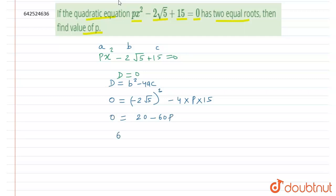This will be equal to 0. So now this 60p will be shifted here, so this will be equal to 60p equals to 20, and p equals to 20 by 60. We get value of p as 1/3.